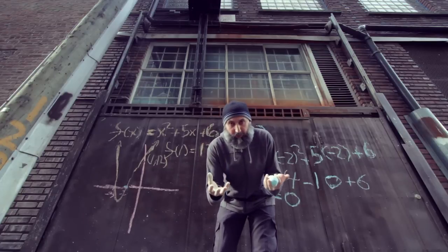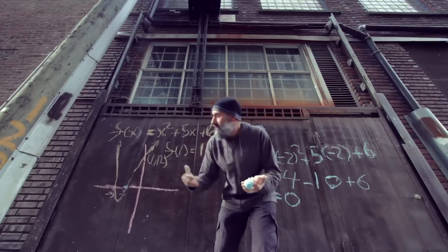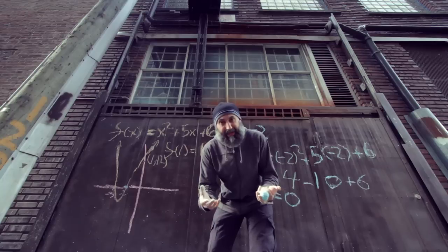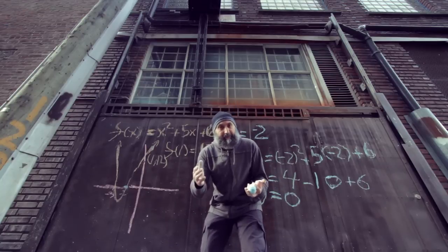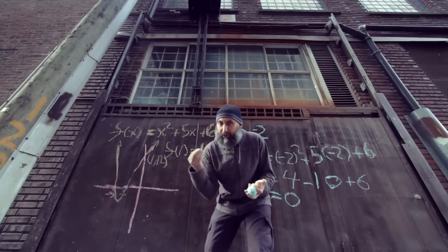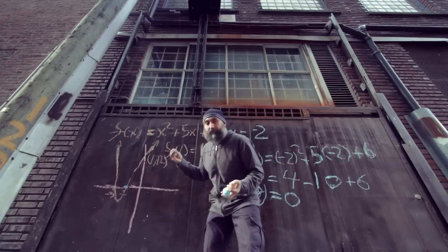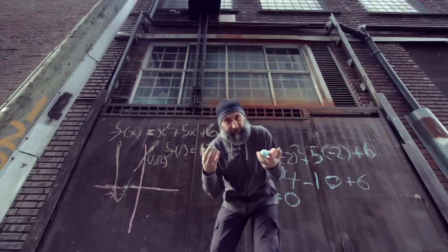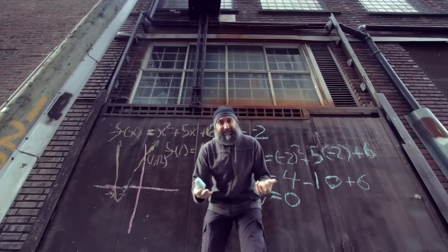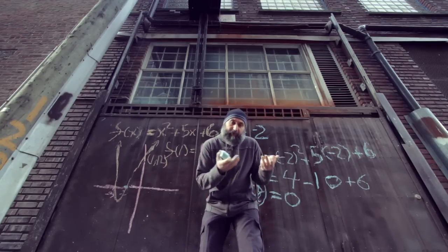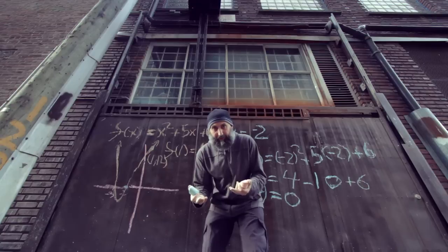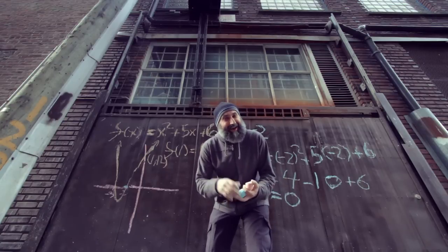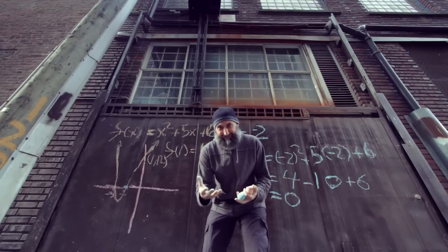And that is all the remainder theorem and the factor theorem tell us. They're basically tools that we use to find out where we are on a function. They're pretty powerful tools — all you do is plug in an X value and find out what your remainder is for the function, and that is your Y. That's basically the remainder theorem and the factor theorem. Hope you guys enjoyed this series. I'll see you in the next video.